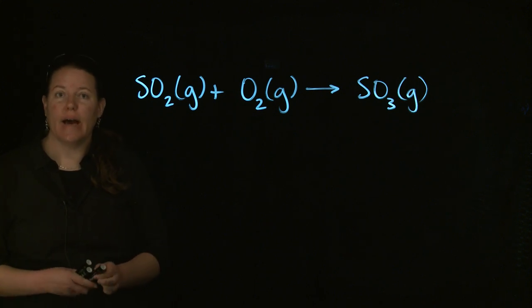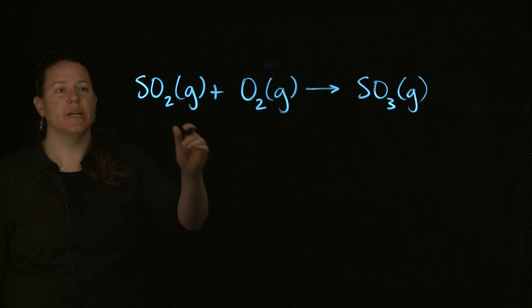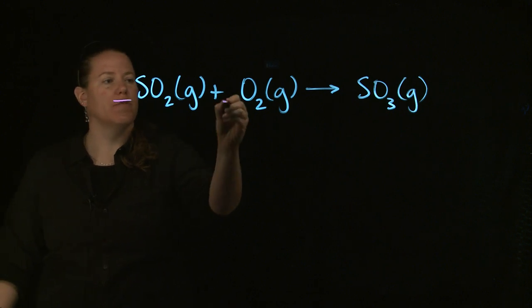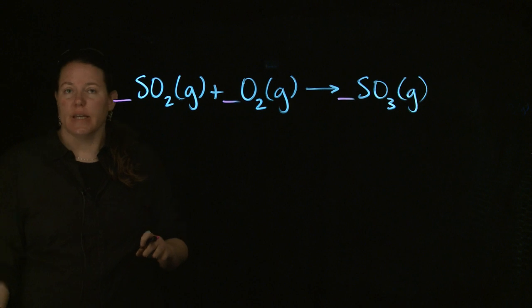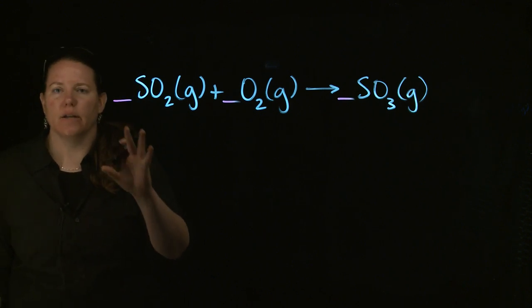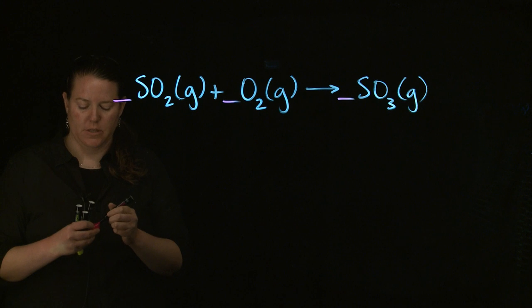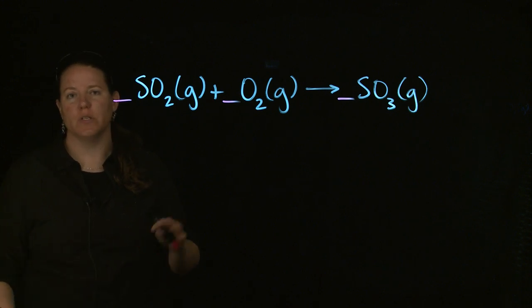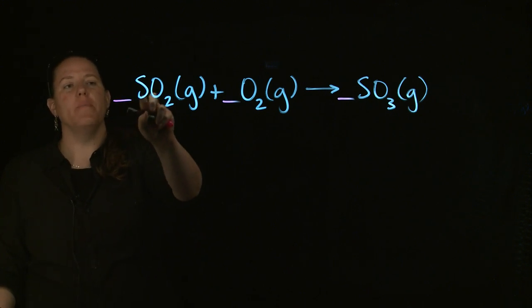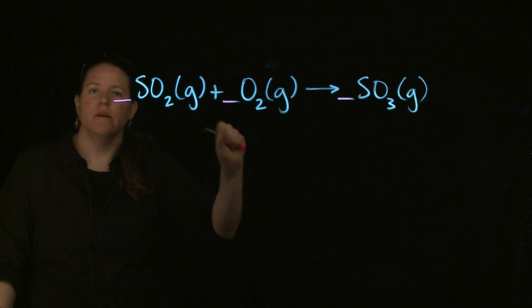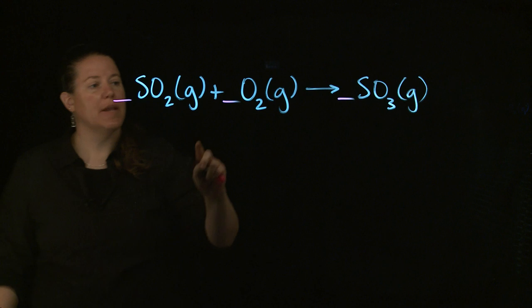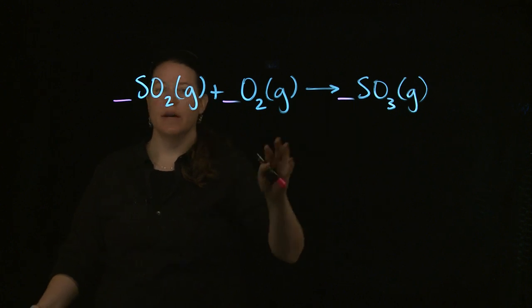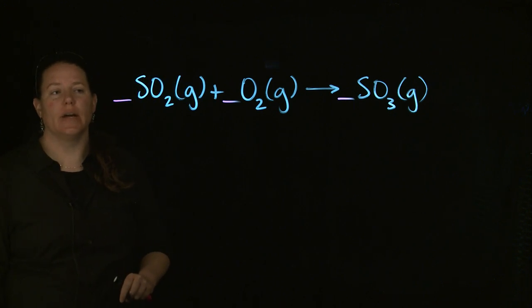So what we tend to add is, if we get a reaction like this that already has the subscripts written out to show the formulas as they exist, we are going to add stoichiometric coefficients to this reaction. And what the stoichiometric coefficients do is they tell me how many of each reactant I'm needing in this particular reaction, or how many of each product I need.